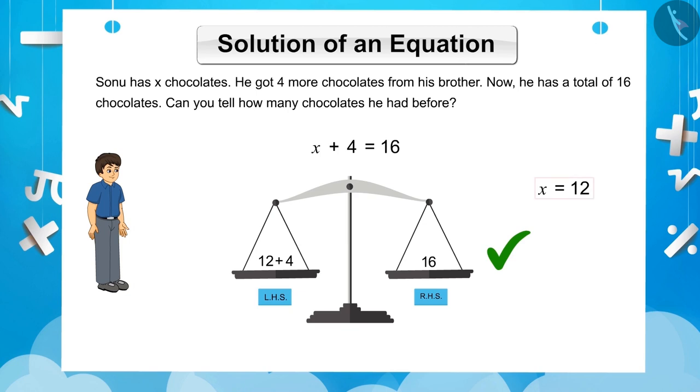Thus, the correct solution of X is 12. Similarly, for different values of X, the equation will not be balanced. This means, this equation has only one solution and that is X is equal to 12.